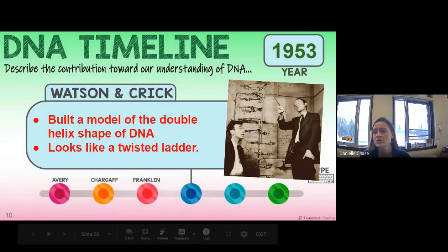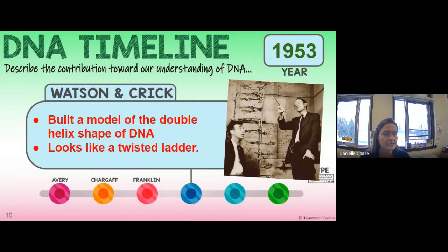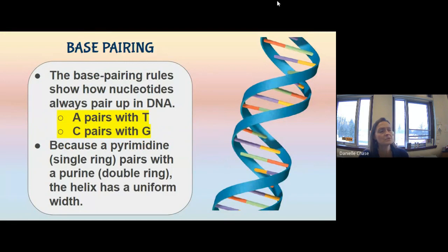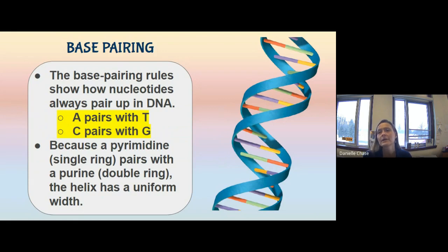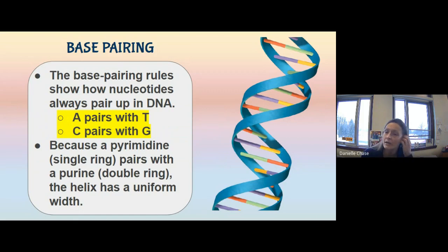Watson and Crick in 1953 were finally able to figure out what the structure of DNA looks like. They built a 3D structure and determined it has a helix shape — a spiral, like a twisted ladder or spiral staircase. DNA base pairing is important for keeping the width of DNA consistent. The base pairing rules show how nucleotides always pair up: adenine always pairs with thymine, and cytosine and guanine always pair up together.